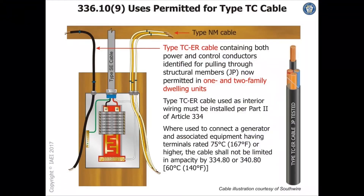Type TC cable is seeing some new applications. It's now going to be allowed to be installed exposed without a raceway in dwelling units. That brings to nine the number of uses permitted for TC cable.